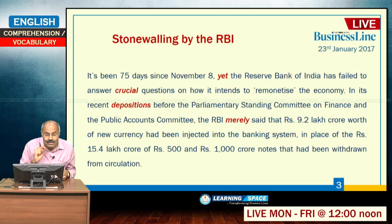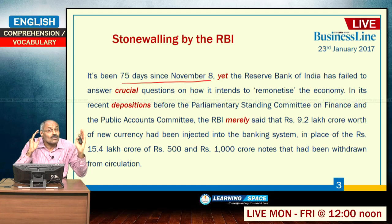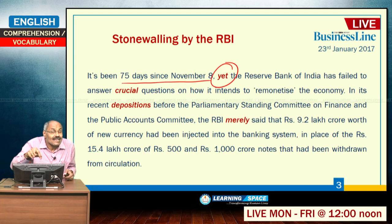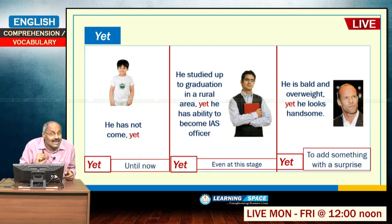It has been 75 days since November 8 — that is, 75 days have passed since demonetization took place. In that context, the word 'yet' is used. Yet can be used in a number of circumstances. For example: 'The boy has not come yet' — meaning until now he has not come.